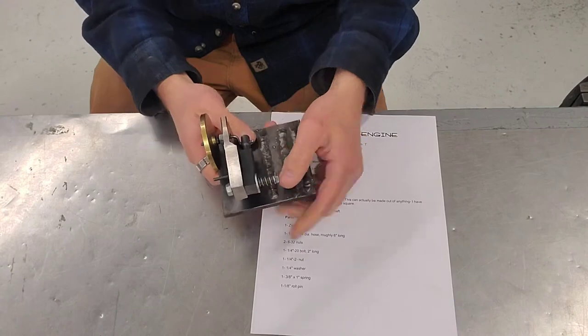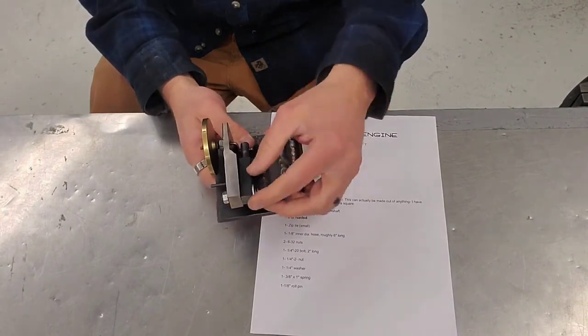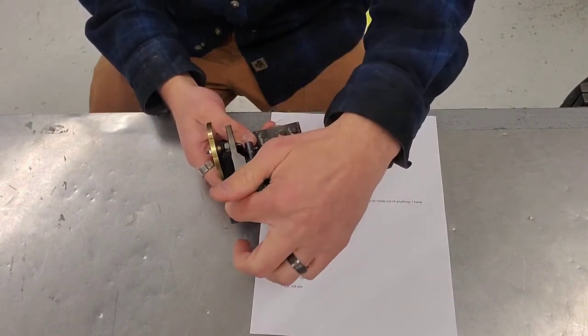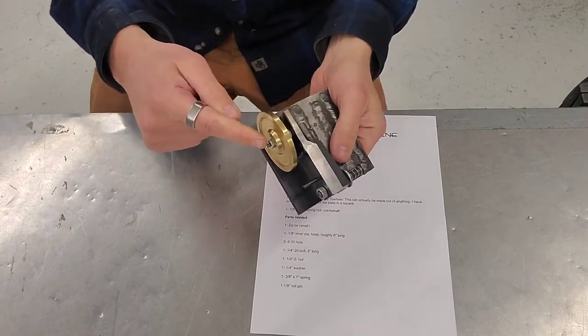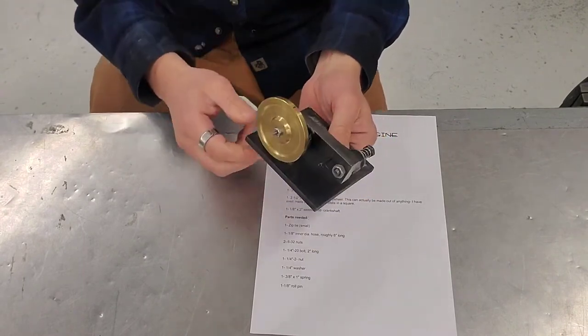We have a few other pieces. We've got this bolt, spring, the washer, the nut, the roll pin, and then we've got a couple of nuts on either side of this supply wheel.